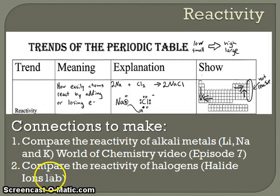The first property we'll examine is called reactivity. For all of the trends, we will consider the arrow to move from low or small values to high or large values. Reactivity is telling us how easily our atoms are going to be able to react to form compounds by either adding or losing electrons.